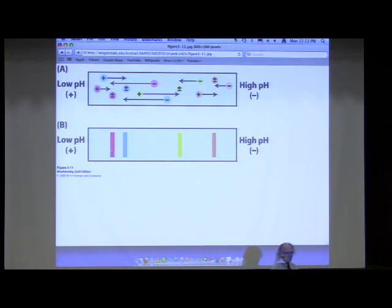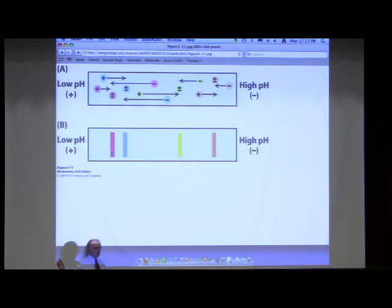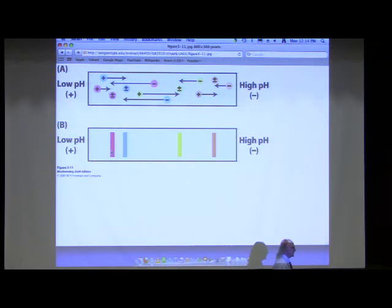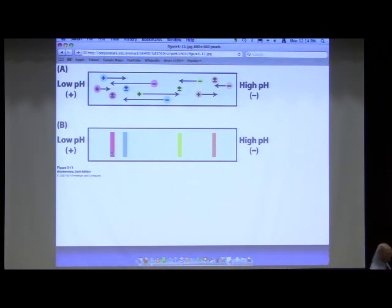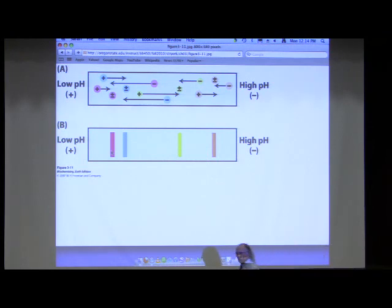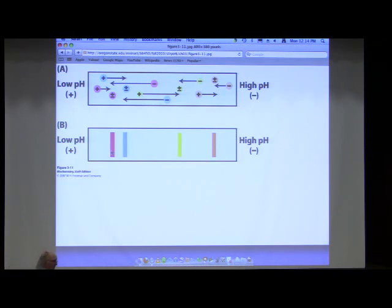When we apply an electrical current to that mixture, the negatively charged beads go as close to the positive electrode as they can, and the positively charged beads go as close to the negative electrode as possible. The most negative will be adjacent to the positive electrode, and the most positively charged beads will be at the other end. What this sets up is a gradient of charge, and that gradient of charge sets up a pH gradient going from 0 at one end to 14 at the other.